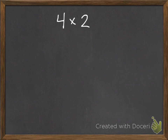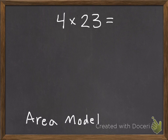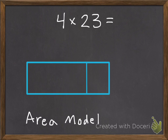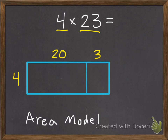A second strategy you can use is called an area model. It's really almost exactly the same except you don't have to draw all the little tiny boxes. So you can just draw the two parts of the rectangle. Write your 4 on the side and break apart your 23 into 20 and 3. Then you figure out the two different sections of your big model.